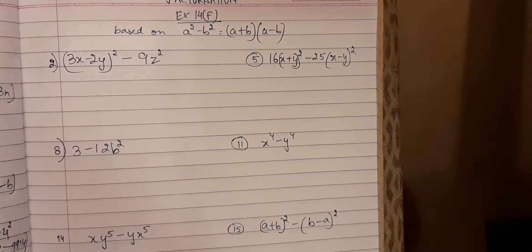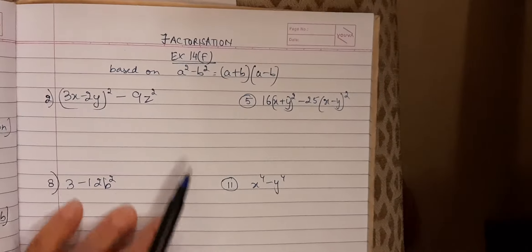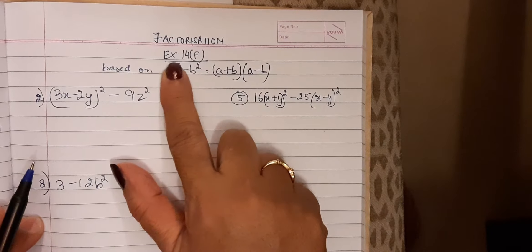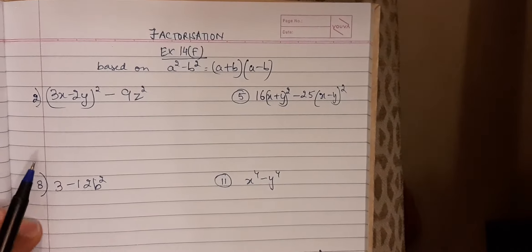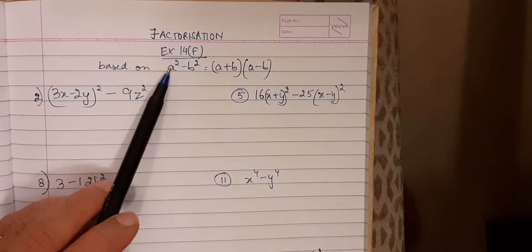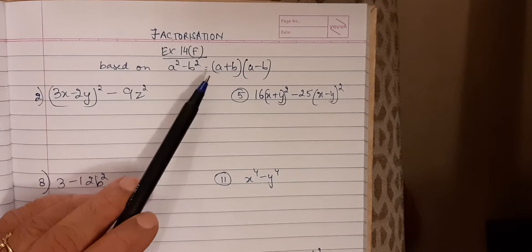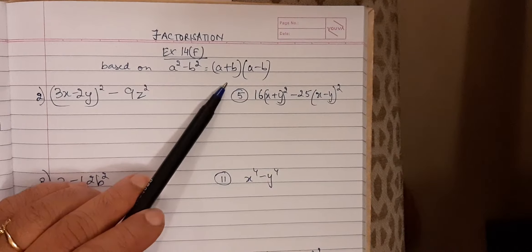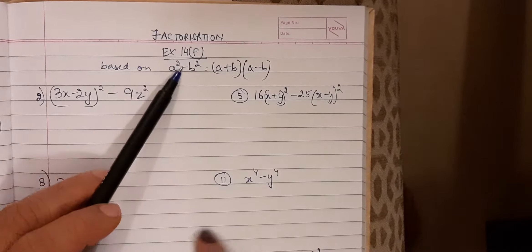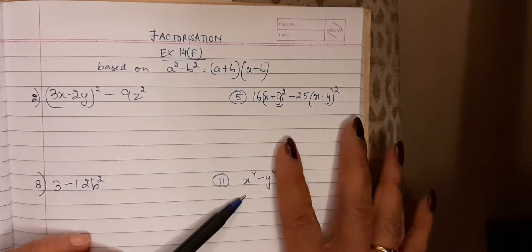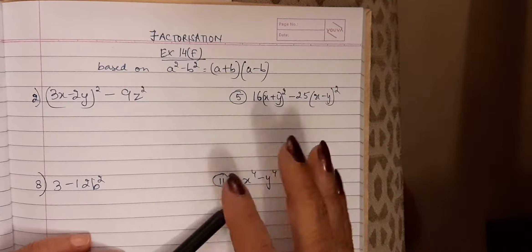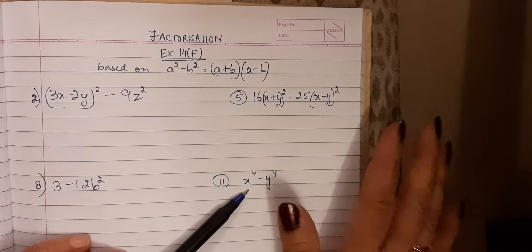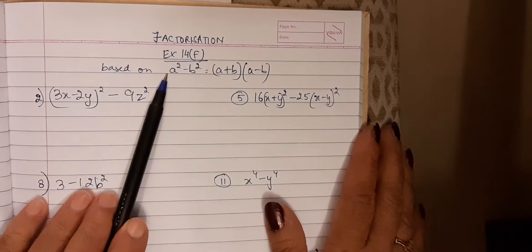Good morning children. Again I am taking up your chapter on factorization. We are going to do exercise 14f, which is again based on the formula a² minus b². The factors of a² minus b² are (a + b)(a - b). In this exercise the questions are a little different from what you have done in exercise 14e, but the formula to be used will be the same.